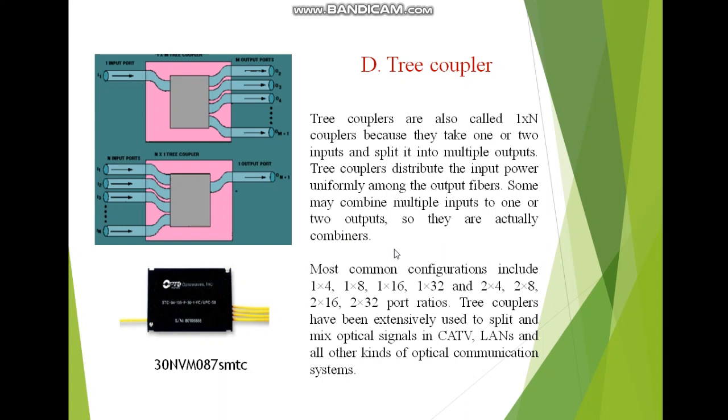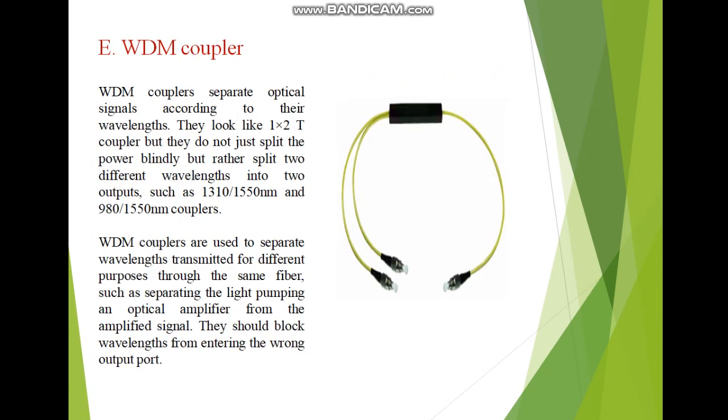Most common configurations are 1x4, 1x8, till 1x32, and if two inputs are there, the combination is 2x4, 2x8, 2x32 port ratios. Tree couplers have been extensively used to split and mix optical signals in LANs and all other kinds of optical communication systems.